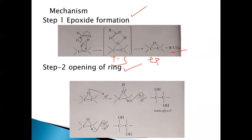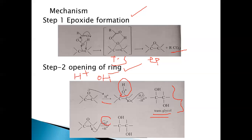The second step is opening of this ring. Hydrolysis can take place in acidic or basic medium, resulting in a trans glycol. Trans addition takes place because when OH is added, further hydrolysis causes the OH to attack from the backside of the molecule — the epoxide is on one face, so OH attacks from the other side. This results in formation of trans glycol, so trans addition takes place in either acidic or basic medium.